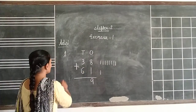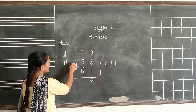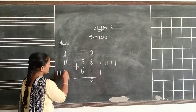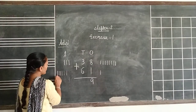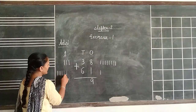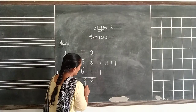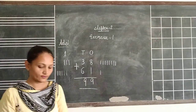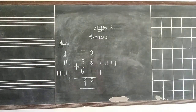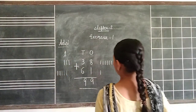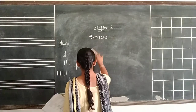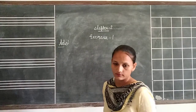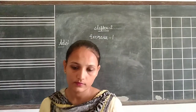Then 3 plus 6. Counting 1, 2, 3, then 1, 2, 3, 4, 5, 6, 7, 8, 9. The answer is 99.